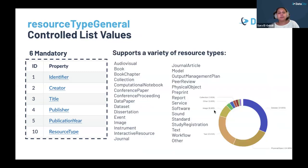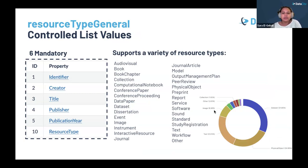What makes the schema particularly valuable is its generic nature, which allows it to support a wide range of resource types across all disciplines. This flexibility means the schema is not just limited to datasets — it's adaptable to various research outputs, from software to journals and more. Currently, we have about 30 controlled list values for the resource type general.